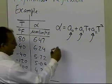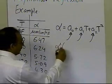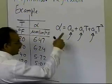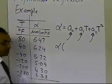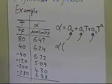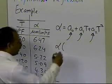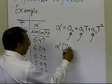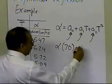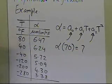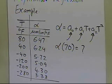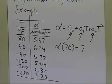Once we find out the constants of this regression model, the question is: can you give the value of alpha at 70 degrees Fahrenheit? Can you predict what the value of the thermal expansion coefficient will be at 70 degrees Fahrenheit?